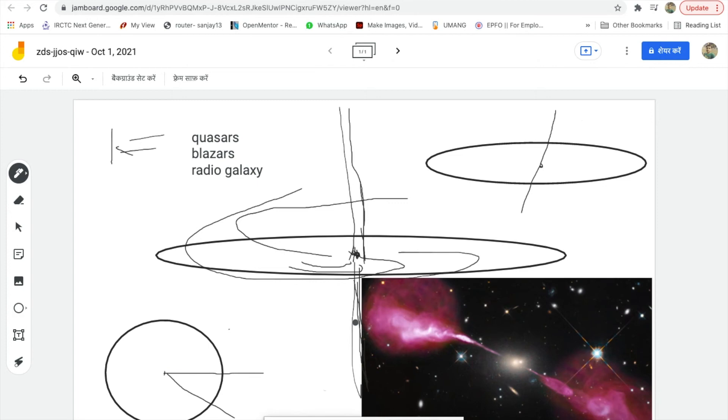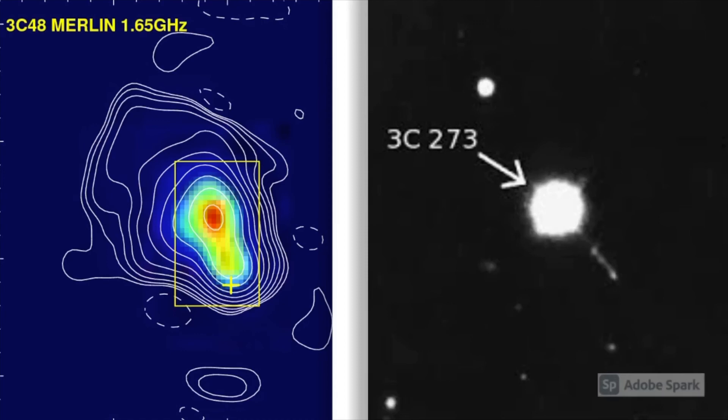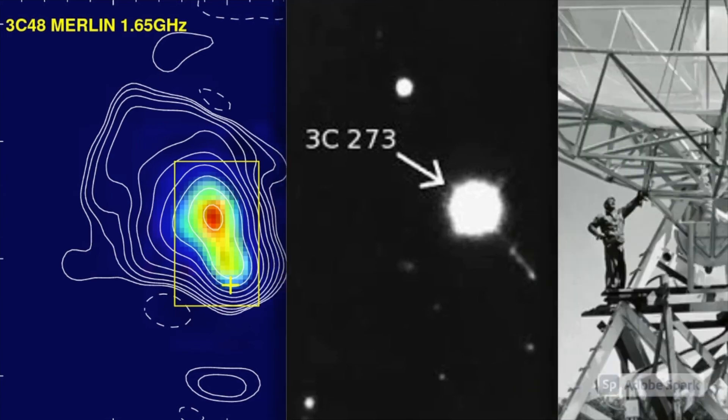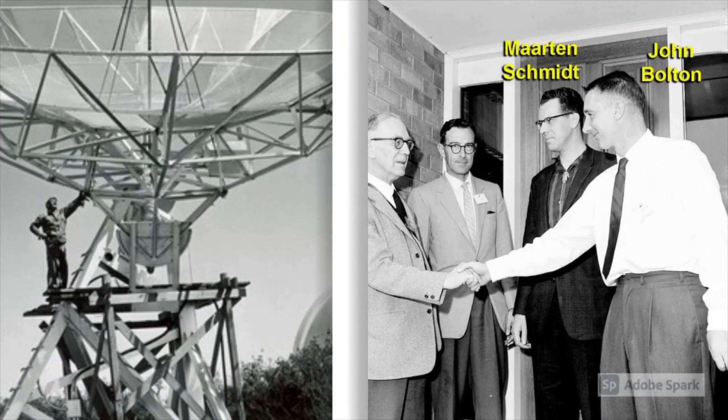Many early observations over quasars, including the first two quasars 3C48 and 3C273, were discovered in the early 1960s by British-Australian astronomer John Bolton. They actually used a 200-inch (around 5 meter) Hale telescope. Bolton and his team were able to observe quasar 3C273 as it passed behind the moon.